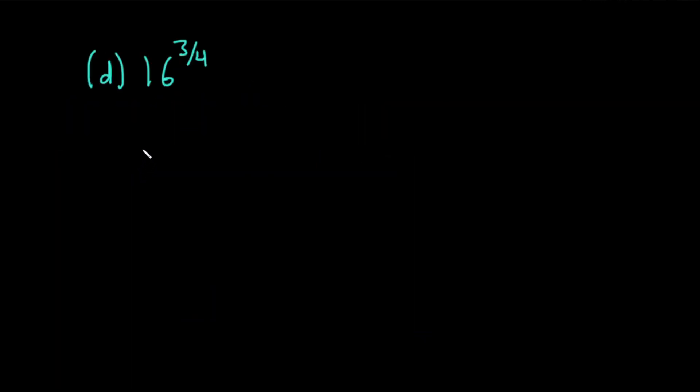Part D, we have 16 to the 3 fourths. Let's work this out. Solution. There's a trick to work this out. I'm going to show you how I do it. So you have a square root, and you put the 16 here. This right here, this number, goes right here in the little pocket. So you put the 4 there. And the 3, you can put it anywhere you want. You can put it inside the square root, or you can put it outside. Better to put it outside.